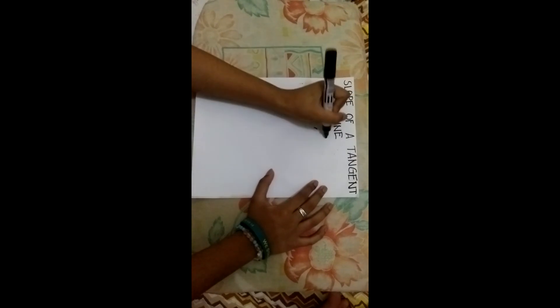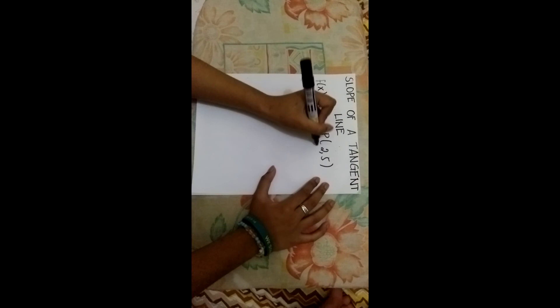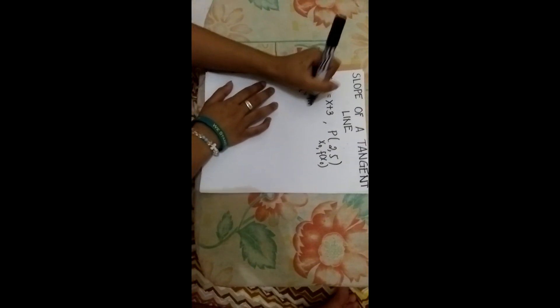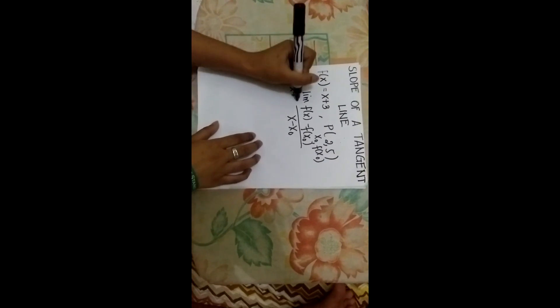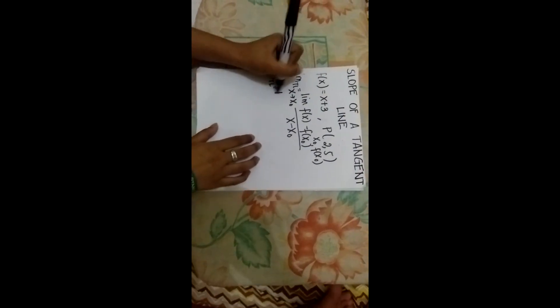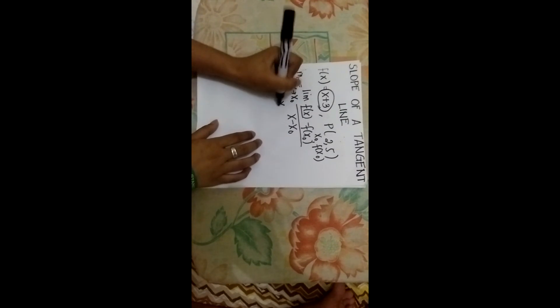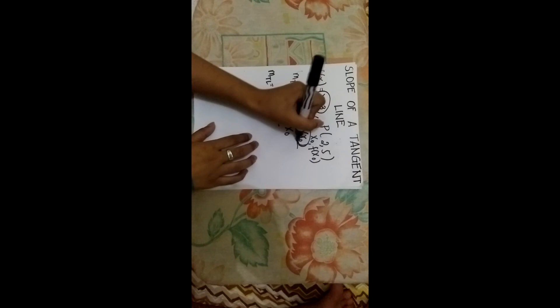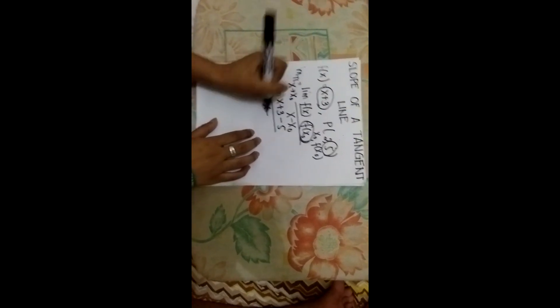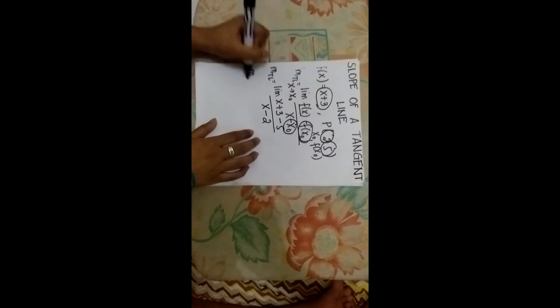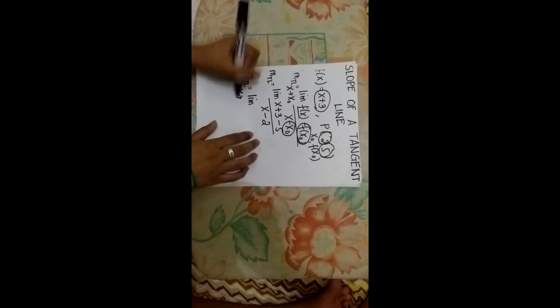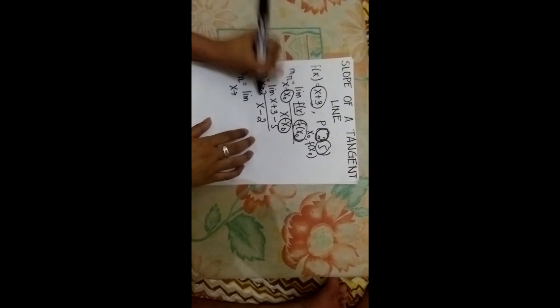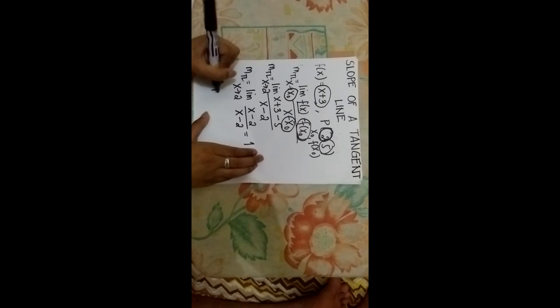Now let's try to solve for the slope of the tangent line of the linear function f(x) equals x plus 3 with the given point of tangency (2, 5), which serves as x-sub-0, f(x-sub-0). The formula is: m-TL equals the limit of [f(x) minus f(x-sub-0)] over [x minus x-sub-0] as x approaches x-sub-0. Substituting, m-TL equals the limit of [(x plus 3) minus 5] over [x minus 2] as x approaches 2, which equals (x minus 2) over (x minus 2), automatically equal to 1. So the slope of the tangent line equals 1.